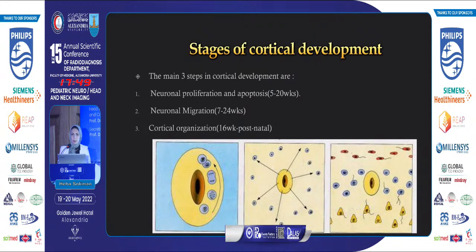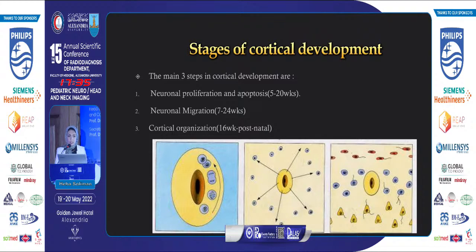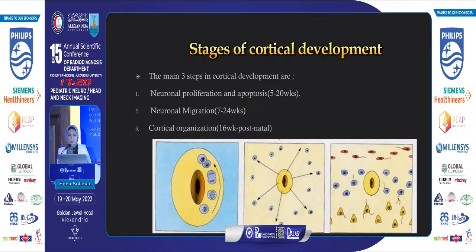There are three main steps in cortical development. First, neuronal proliferation and apoptosis, which starts at the periventricular region. Then, neuronal migration of these cells to the cortex. And at the final destination, at the cortex, it undergoes cortical organization, a process that continues until the age of two years postnatally.